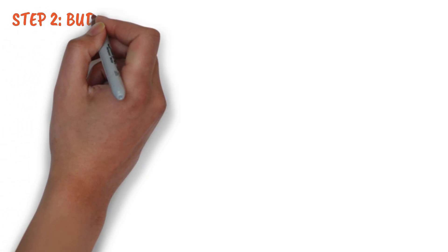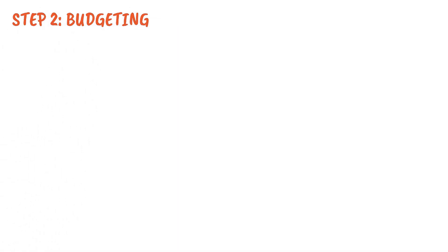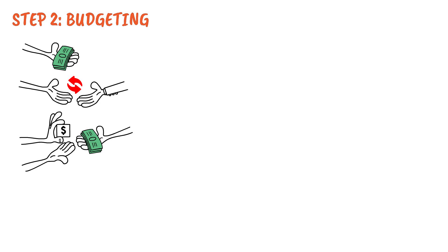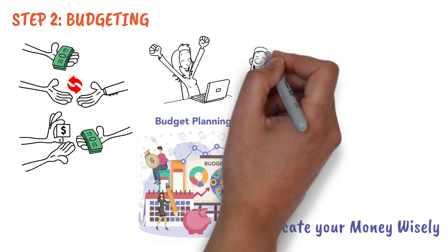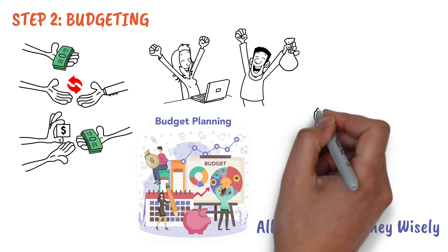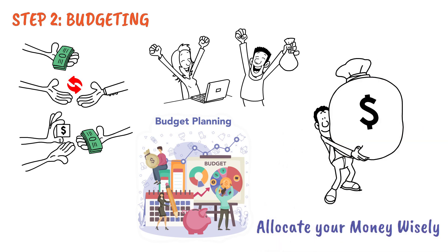Step 2: Budgeting. It's crucial to track your expenses and establish a solid budget. Cut down on unnecessary costs, prioritize saving and investing, and allocate your money wisely. By making intentional financial decisions, you can start growing your wealth, even if it's little by little.